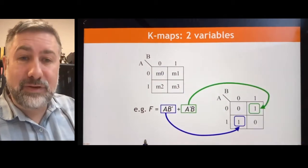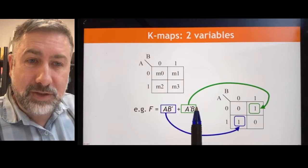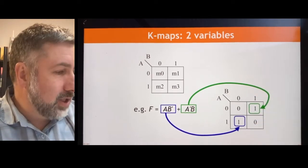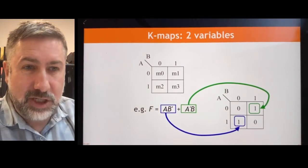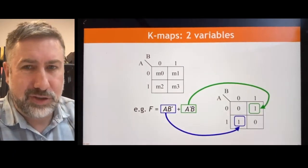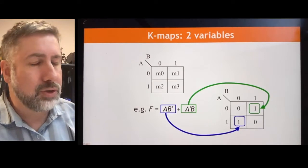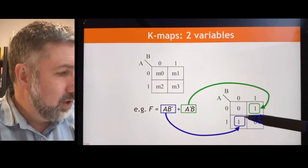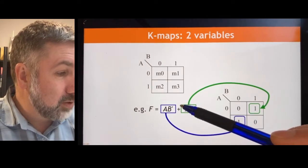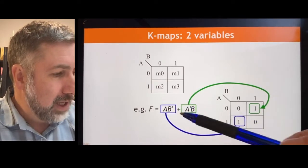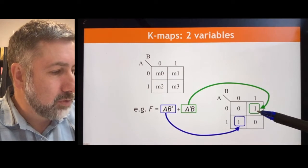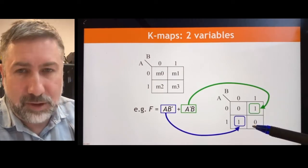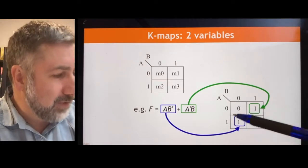And then if we have a function that is written out as a sum of minterms, we can draw the truth table in this Karnaugh Map such that we can get some interesting simplification. Now, this two-variable version, there's not a lot we can do that we can't just do on paper anyway. So it's not going to give us a lot, but it's a good introduction. So here, A, B prime, which is minterm 2, goes here. And A prime B, which is minterm 1, goes here. The other two are marked as 0 because those minterms are not part of the function.